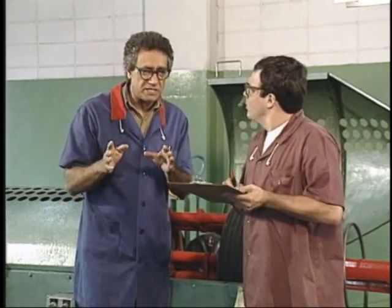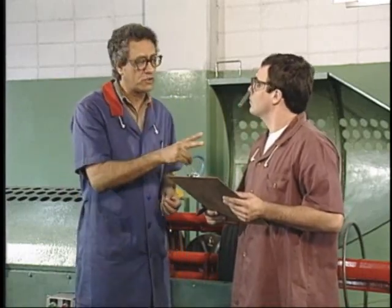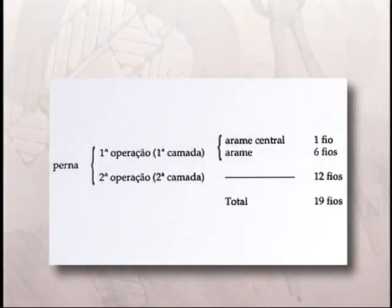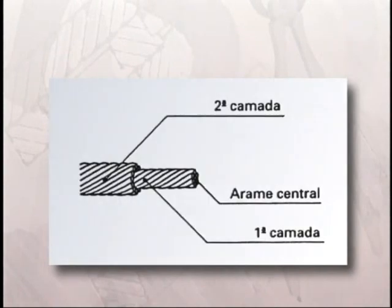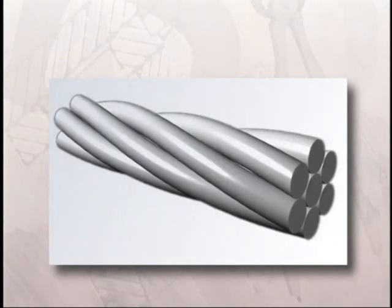Num cabo de aço 6 por 19, a primeira operação, ou primeira camada, leva um fio de arame central e 6 fios de arame. A segunda camada leva 12 fios, o que dá um total de 19 fios. Quando a perna é construída em várias operações, os passos ficam diferentes no arame usado em cada camada, causando atrito e desgaste dos fios. Passo é a distância entre os pontos de um fio no mesmo alinhamento do cabo.